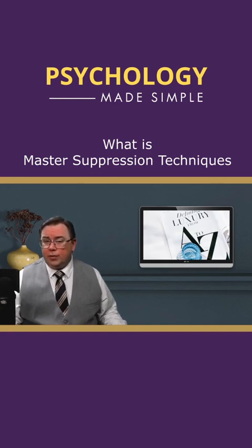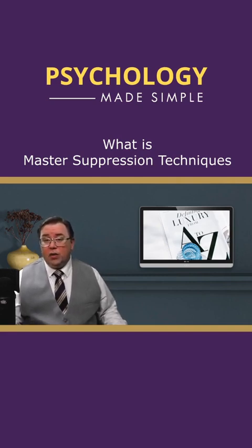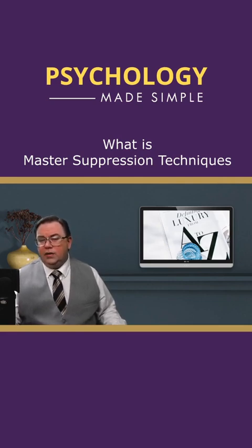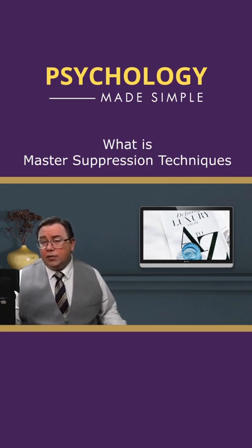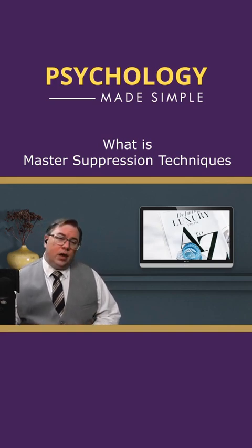You will see an awful lot of master suppression techniques on American television, especially high school television, where you have the cheerleaders and the jocks and the popular kids who are suppressing and using master suppression techniques on the less popular children. It was a huge thing in the 80s and 90s, and I suppose it's still a thing now. Its aim is ultimately exclusion from the in-group by deliberately overlooking or ignoring the outcasts that they want to structurally exclude.